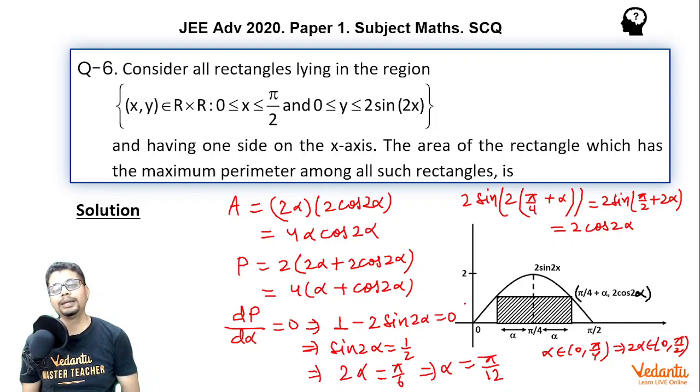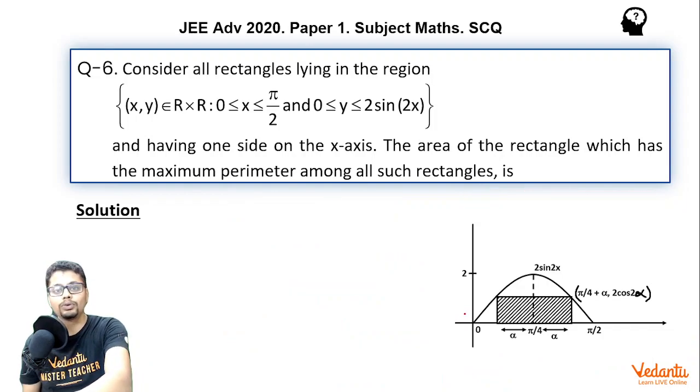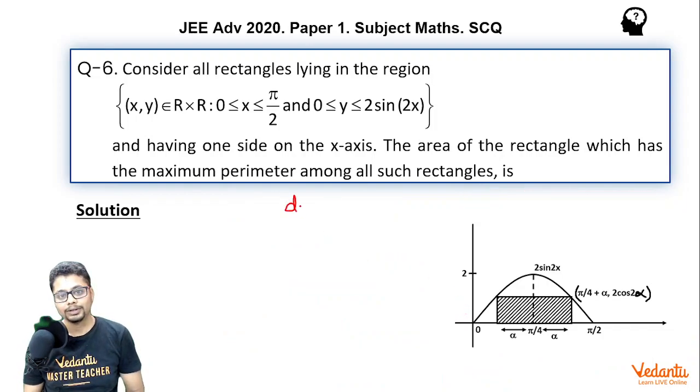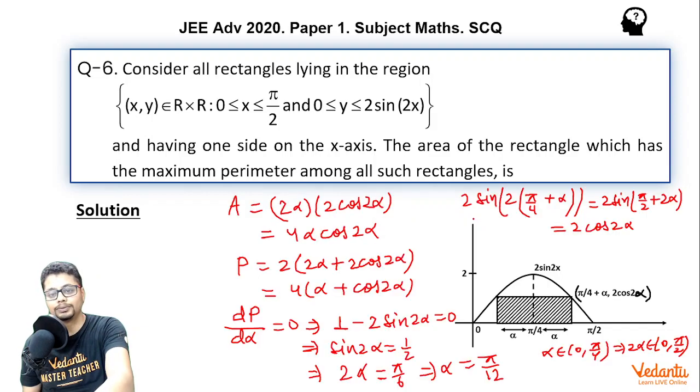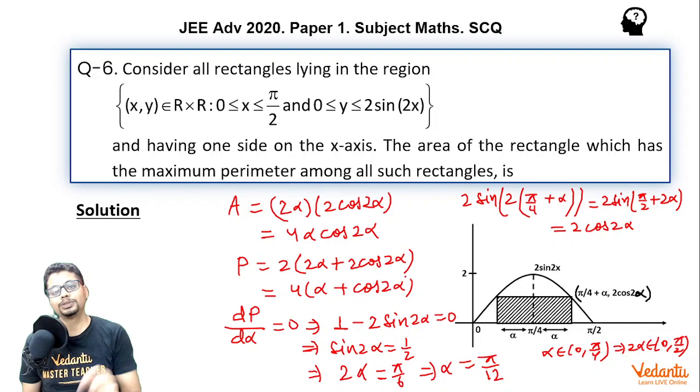Now how can we be very sure that at α equal to π/12 perimeter is indeed maximum? So we may go for second derivative. So d²P/dα² would become 4 times minus 4cos(2α). You may check this out. Since dP/dα is 1 minus 2sin(2α), d²P/dα² would be minus 4cos(2α).